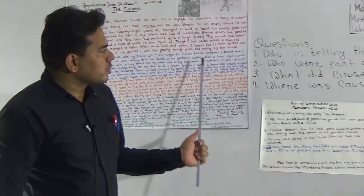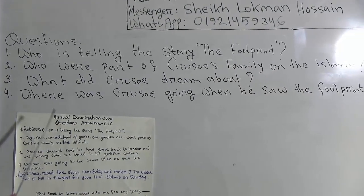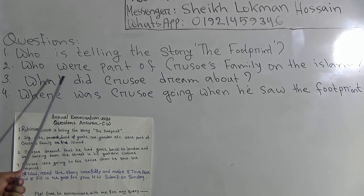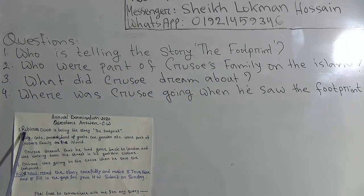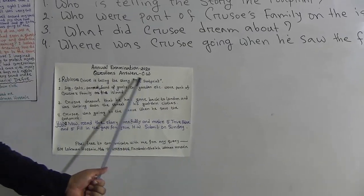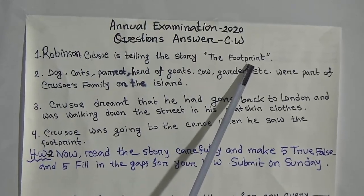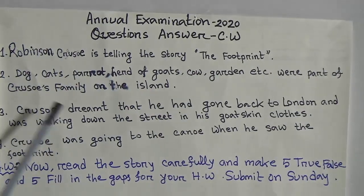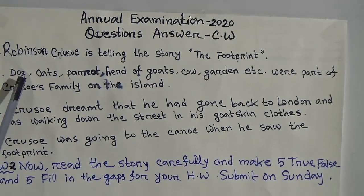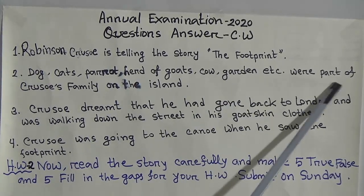Now look at some questions regarding this passage. There are four questions — open your main textbook and in your classwork copy write the answers. Question one: Who is telling the story of the footprint? The answer is: Robinson Crusoe is telling the story of the footprint. Question two: Who were part of Crusoe's family on the island? According to the passage, the dog, cats, parrot, and herd of goats were part of Crusoe's family on the island.